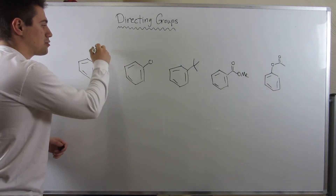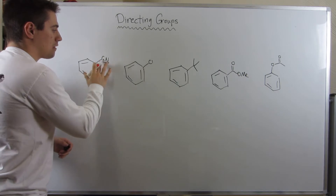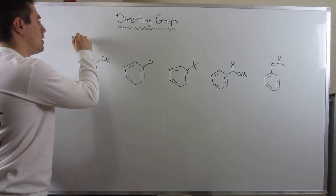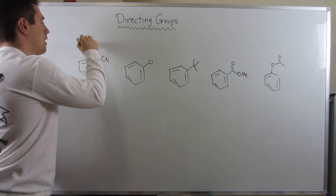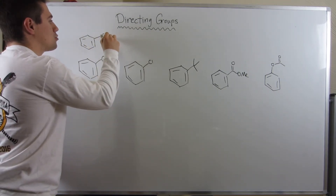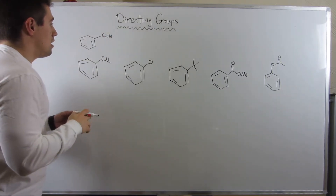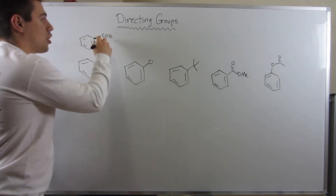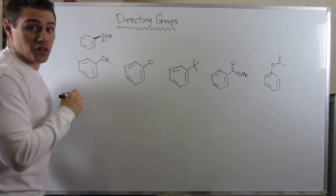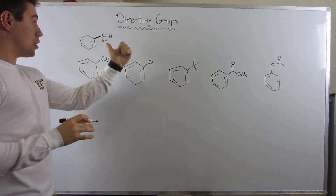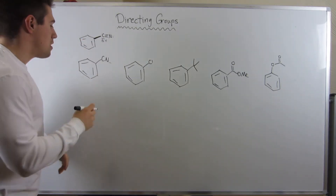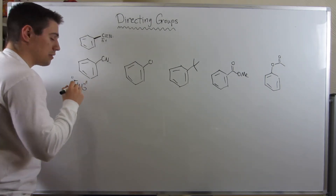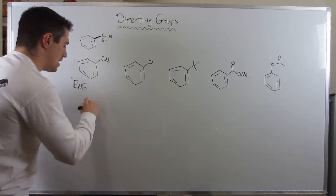Let's identify some directing groups. First: a nitrile group, CN. Expanding it: we have a carbon triple bonded to a nitrogen. The carbon directly attached to the ring has a big delta plus on it — it has no electrons to donate to the benzene ring. So the nitrile is an electron withdrawing group, which means it is a meta director.